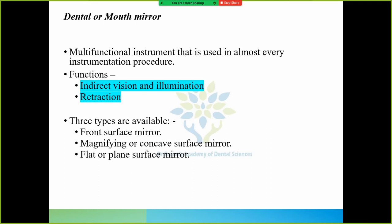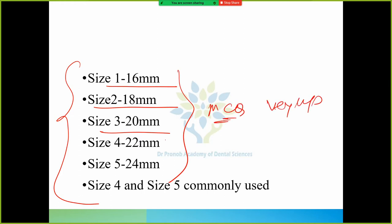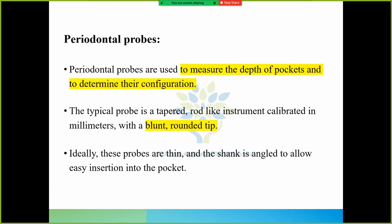Dental or mouth mirror: Mouth mirror is used for indirect vision and illumination and retraction. Three types of mouth mirror are there: front surface, magnifying, and flat surface mirror. These are the different sizes of mouth mirror. Size 1 is 16mm, size 2 is 18mm, size 3 is important, size 4 and size 5 are commonly used. Generally we use size 4 and size 5 in our clinical practice.